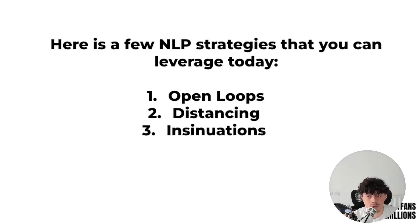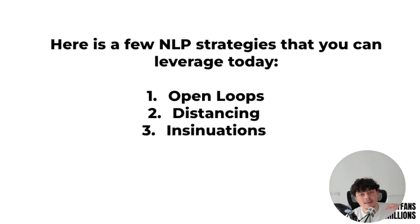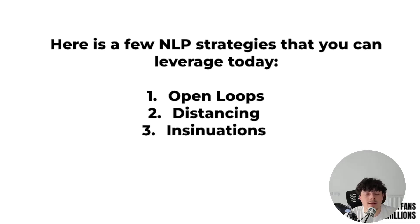Here are a few NLP strategies you can leverage today. First: open loops. An open loop is like a cliffhanger — just as a TV show cliffhanger prompts you to watch the next episode, an open loop keeps the model top of mind for subscribers. The brain conflates thinking of someone frequently with what love is, so it makes subscribers think they're in love with the model. An open loop can be as simple as the model sending 'hey, I've got a question' to all subscribers at 2 in the morning and not responding until the next day.